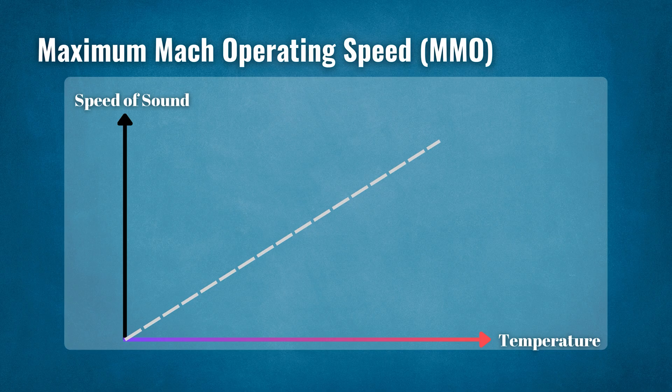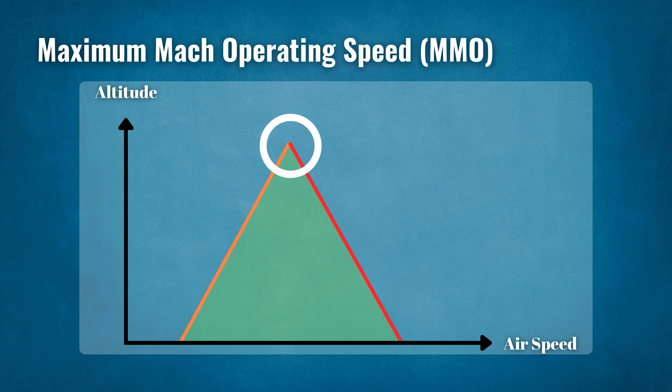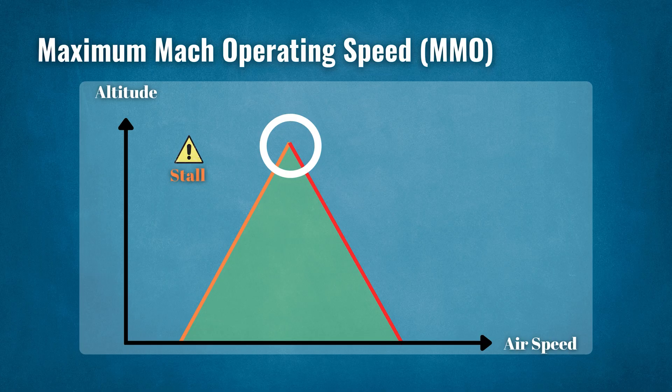As our graph shows, the narrow operating envelope of coffin corner exists at the peak of the graph pyramid, bordered on one side by the stall limit and on the other side by the Mach limit. Avoid flying too fast or too slow.